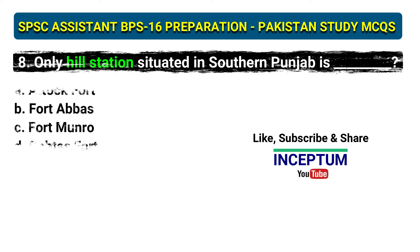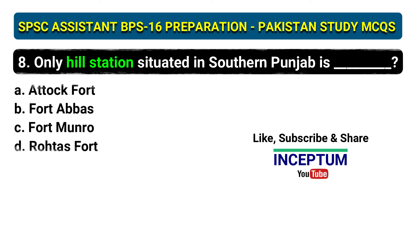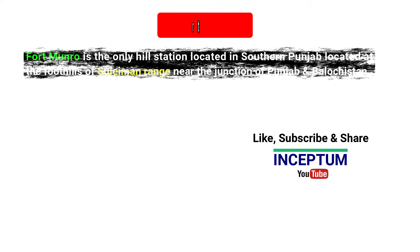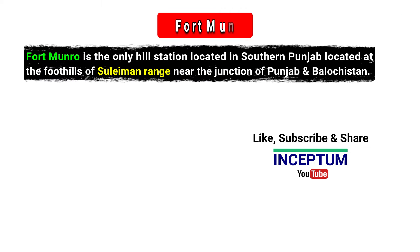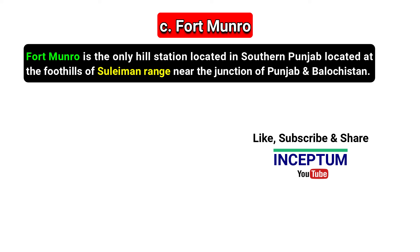Question 8: Which is the only hill station situated in southern Punjab? Options: Attock Fort, Fort Abbas, Fort Munro, Rohtas Fort. The correct answer is option C, Fort Munro. Fort Munro is the only hill station located in southern Punjab, situated at the foothills of the Suleiman Range near the junction of Punjab and Balochistan provinces.